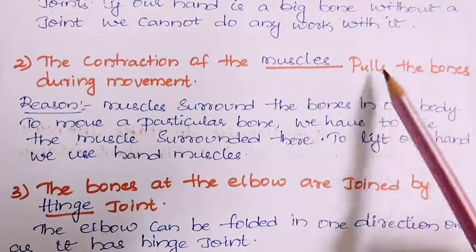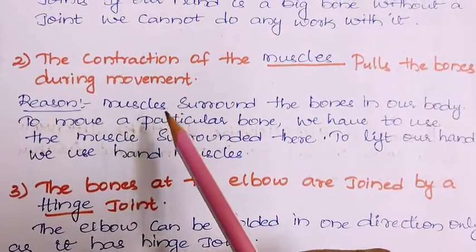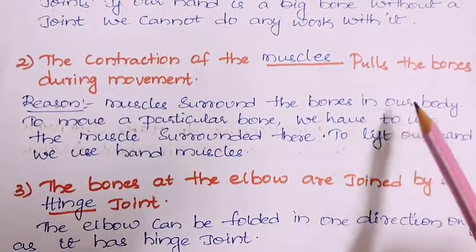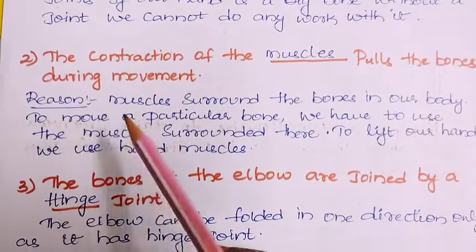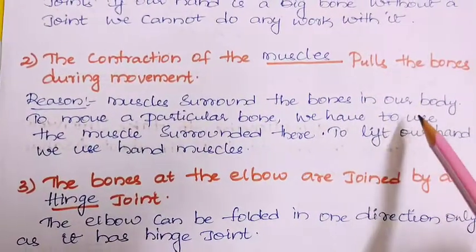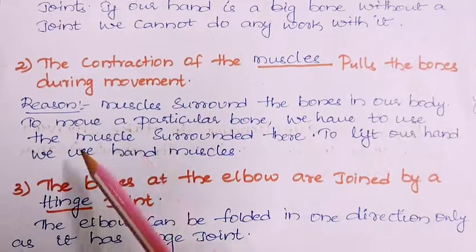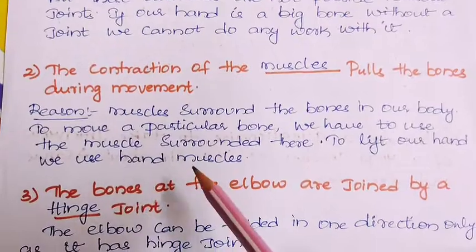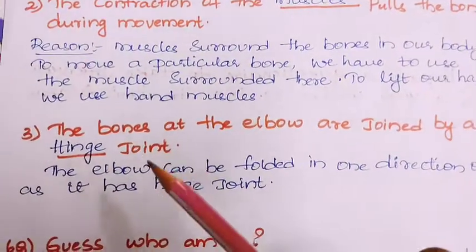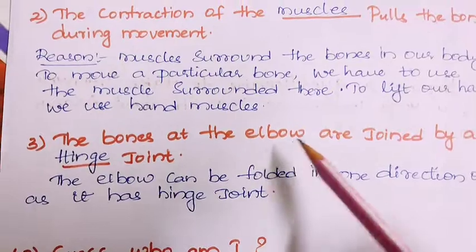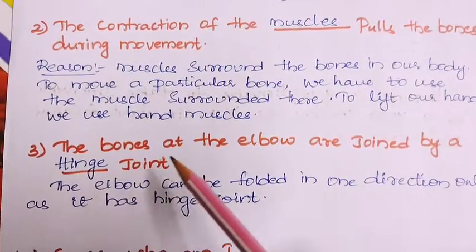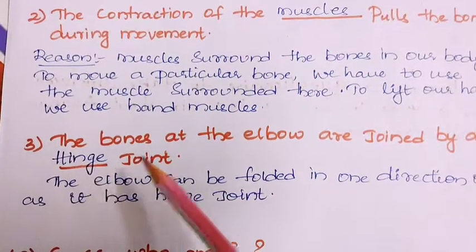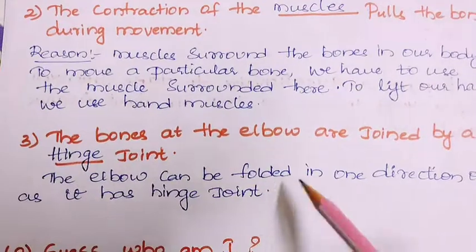To lift our hand we use the hand muscles. Third blank: the bones at the elbow are joined by a hinge joint. The elbow can be folded in one direction only, as it has a hinge joint.